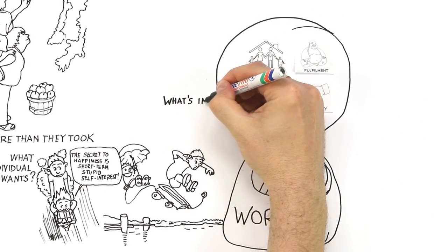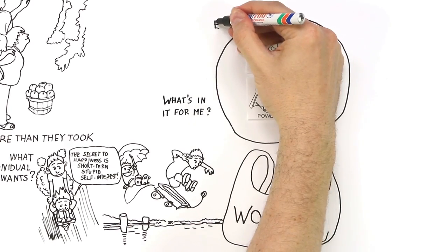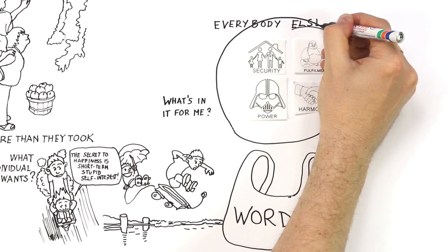And they think that to pursue their own immediate self-interest is the best way to get those four things. What they don't realize is that those four things are the product of acting on the basis of everybody else's interest rather than your own.